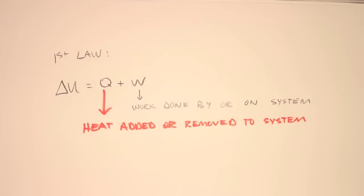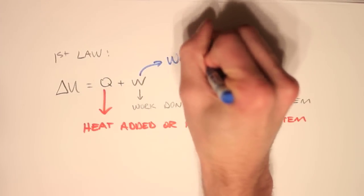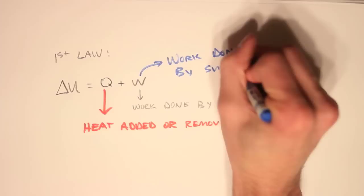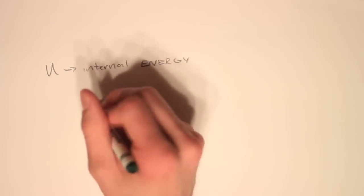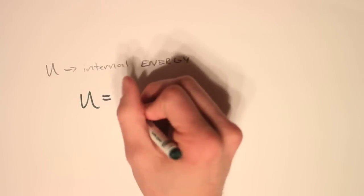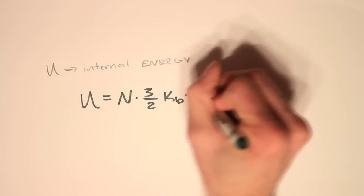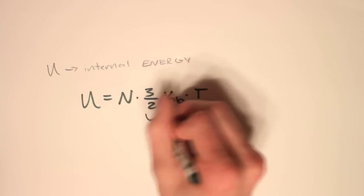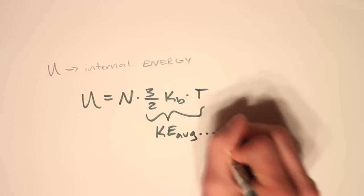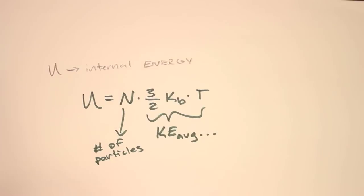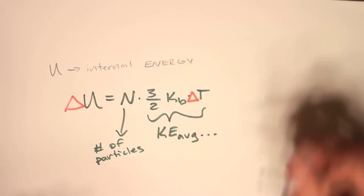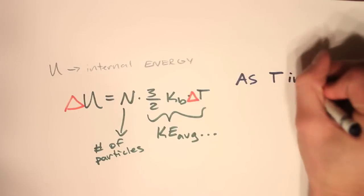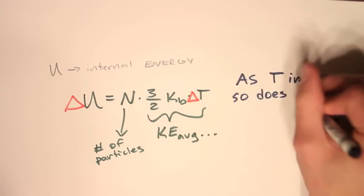Another way to think of work: this is the work done by the surroundings. Let's break the equation down and talk about U, or the internal energy of a system. Gases have a kinetic energy — U is the total kinetic energy of that system. It's the number of particles times the average kinetic energy, where particles means the basic atoms or molecules. The change in internal energy is related to the change in temperature.